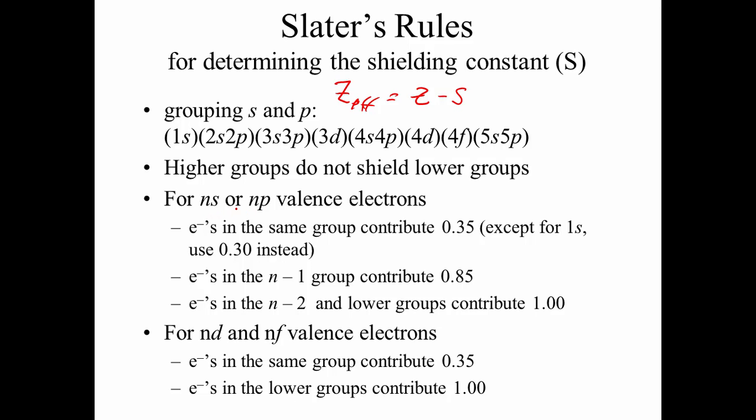If we're considering an s or p orbital or electron, electrons in the same group will shield 0.35. So again, if we're looking here, if there's any p electrons, they partially shield that s electron by 0.35, unless we're looking at 1s. N minus 1 group would shield 0.85. So again, if we're looking here, this is, that's 4, so that's 3. N minus 1, those group, those electrons would shield 0.85, and anything lower than that shields 1.